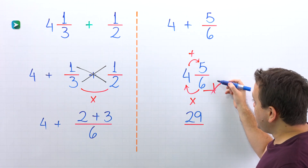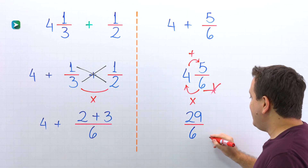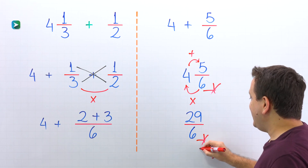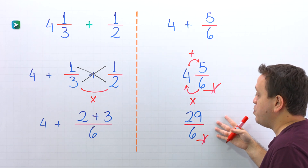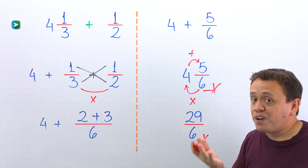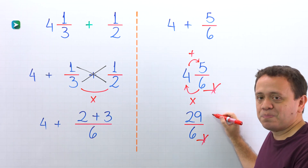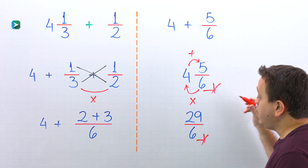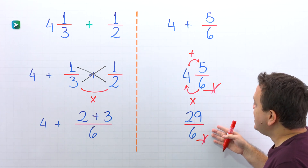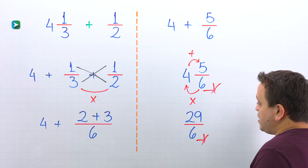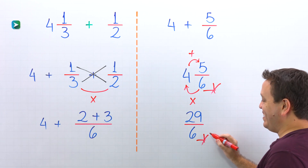And now the denominator stays the same: 6. The answer is 29 sixths. So here we have the answer as a mixed number and here as an improper fraction. Also, don't forget that an improper fraction is a fraction where the numerator, the top number, is greater than or equal to the denominator, the bottom number. 29 sixths is an improper fraction given that the numerator 29 is greater than the denominator 6.